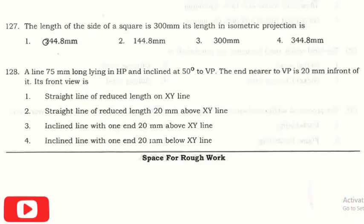The next question is: the length of a side of a square is 300 mm, its length in isometric projection? The right answer is option one, that is 244.8 mm.